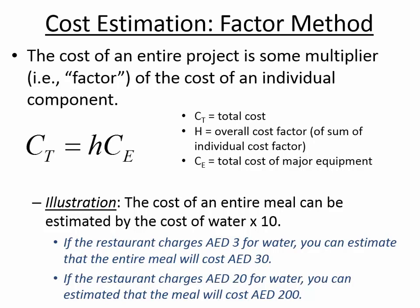If you walk into a restaurant and a bottle of water costs 20 dirhams, maybe you want to walk out — you probably don't want to spend 200 dirhams for a meal. That's the main idea behind the factor method. It doesn't only apply to meals; you can estimate the price of a building by how much concrete will be used. The building is more than concrete — it also includes reinforcing steel, electrical systems, water systems, heating and cooling — but if you know one thing, you can extrapolate the entire cost.